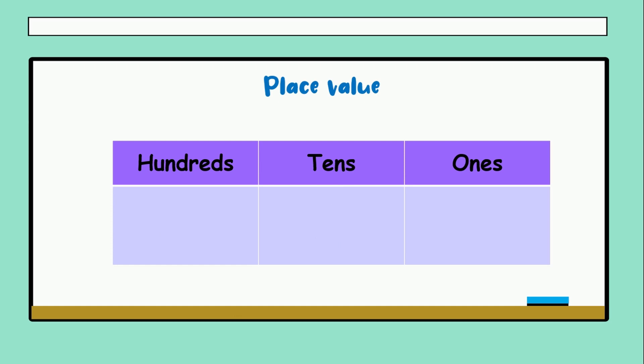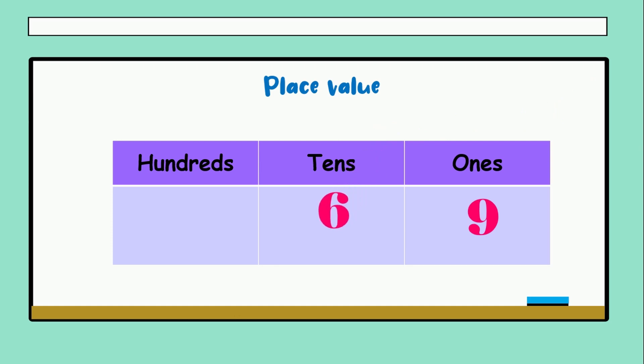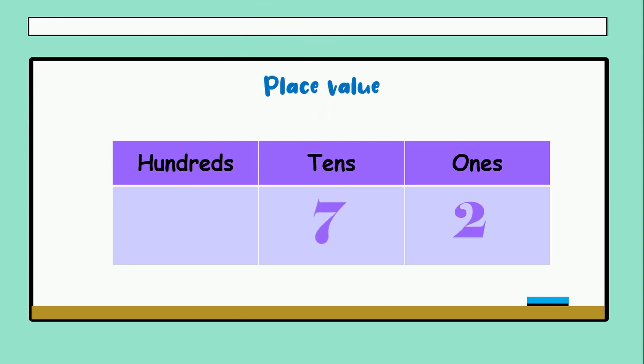Let's continue with the next example: nine ones, six tens, and three hundreds. The name of the number is three hundred sixty-nine. Very good. The other example — we have just two digits. Two ones and seven tens. Seven tens. Very good.